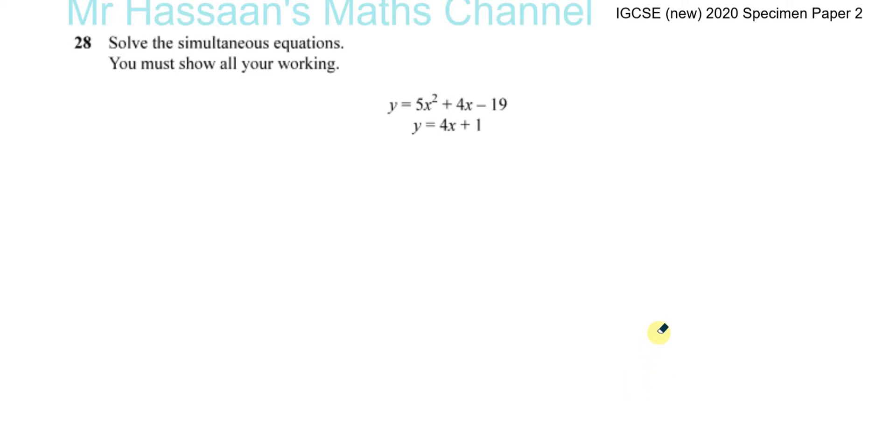Now for the last question on the paper, question number 28, which is about simultaneous equations. This is actually something kind of new in the syllabus. Previously we would never have found a quadratic equation and a linear equation being asked to solve simultaneously.